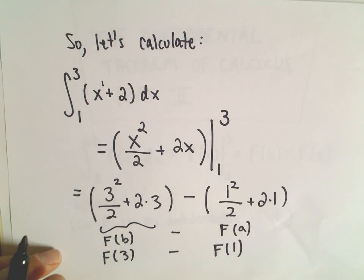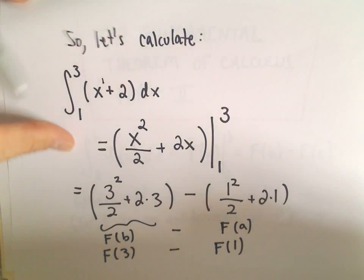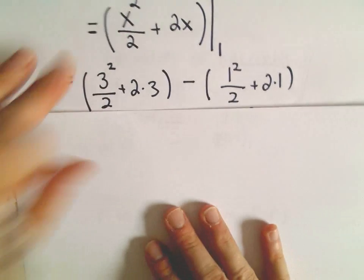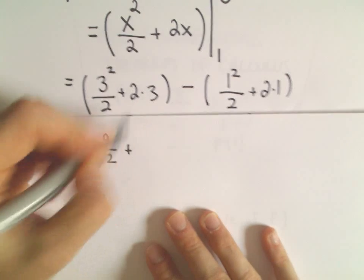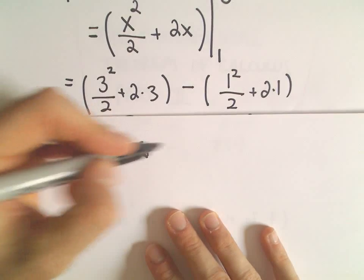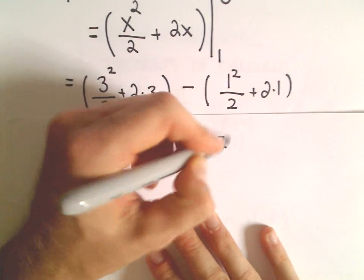And now we just have to do the arithmetic. So I don't think this one is too terribly bad to compute. Let's see, so 3 squared is 9. So we have 9 over 2 plus 2 times 3, which is 6, minus, we would have 1 half plus 2.